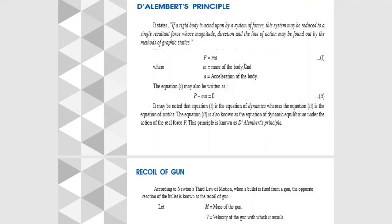Today we will discuss a topic from Applied Mechanics, which is d'Alembert's principle. It states that if a rigid body is acted upon by a system of forces, this system may be reduced to a single resultant force whose magnitude, direction, and line of action may be found by the method of graphic statics.